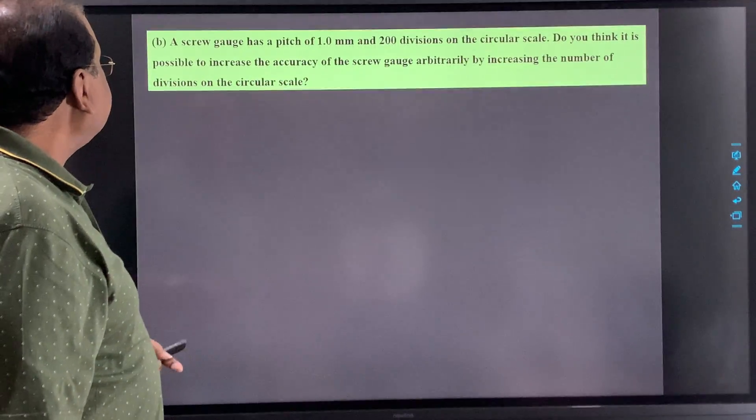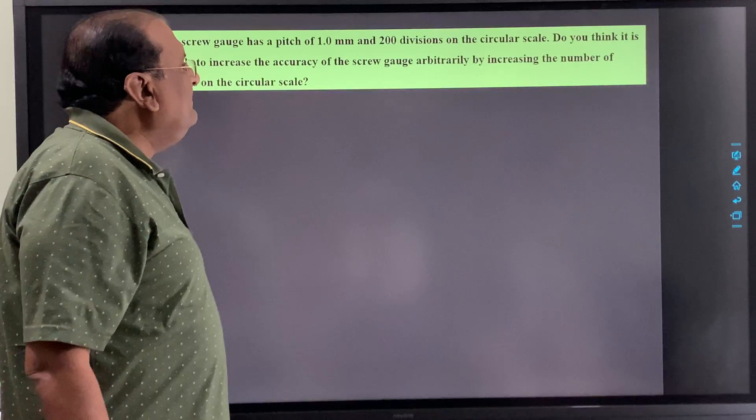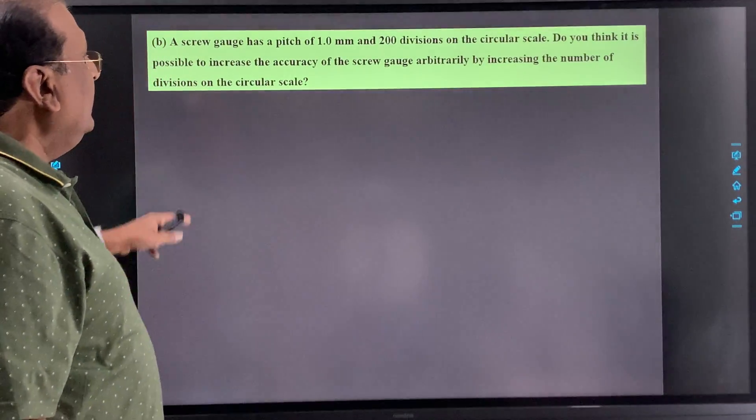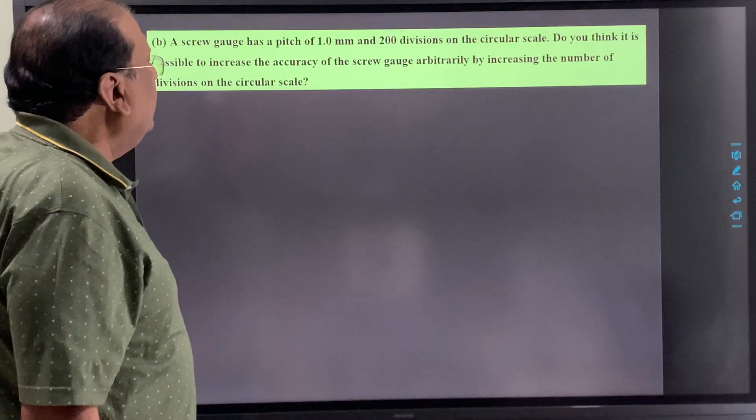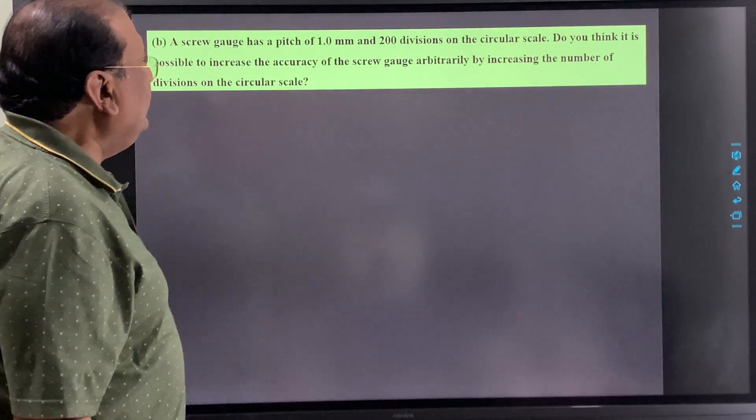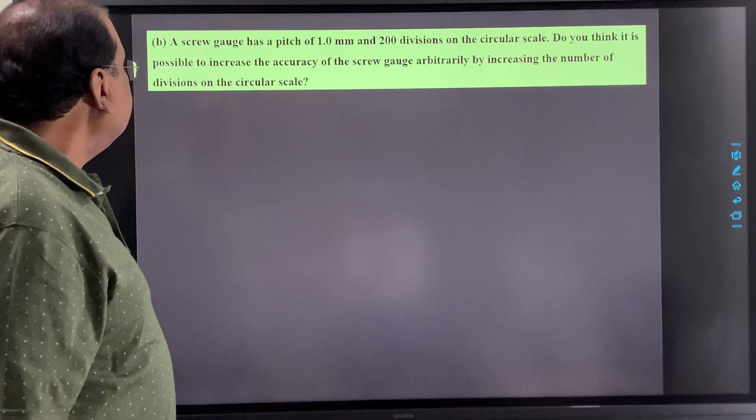Now second question. A screw gauge has a pitch of 1 millimeter and 200 divisions on the circular scale. Do you think it is possible to increase the accuracy of the screw gauge arbitrarily by increasing the number of divisions on the circular scale?